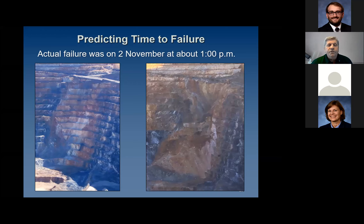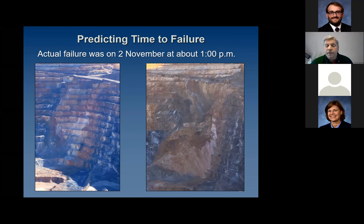The slide on the left is the pre-failure, and on the right is post-failure. The actual failure occurred on November 2nd, as predicted — only about 1 PM instead of 9:30 AM. Plenty of time to get the people out of the pit and to move the valuable equipment. This is a real success story. It lets the mine stay in production status for as long as is reasonably safe, then applying an adequate factor of safety on the time to get everyone out before failure occurs.